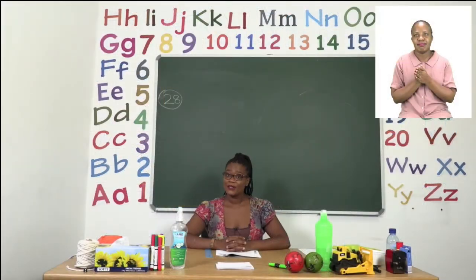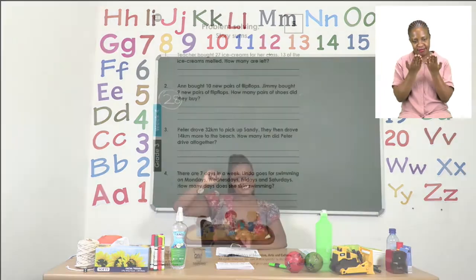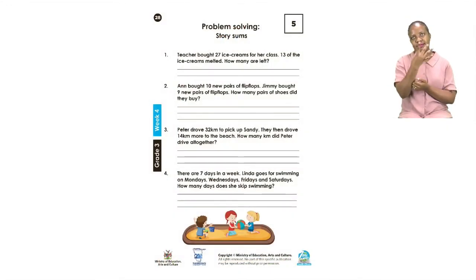For our first exercise today please turn to page 28. On page 28 we have some problem solving and these are going to come in the form of story sums. Now we are going to read each one. You are going to read each one but we are going to do one and four together. So let us take a look at number one.